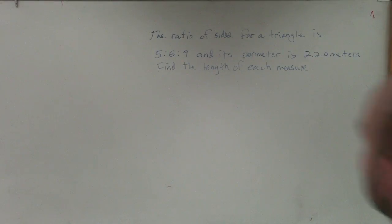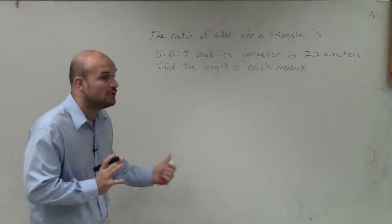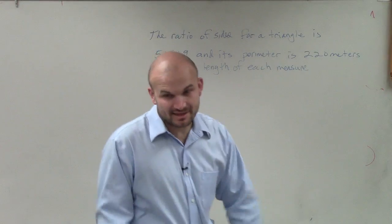All right. So in this case, it says the ratio of the sides of a triangle is 5, 6, and 9, and its perimeter is 220 meters. Find the length of each measure.